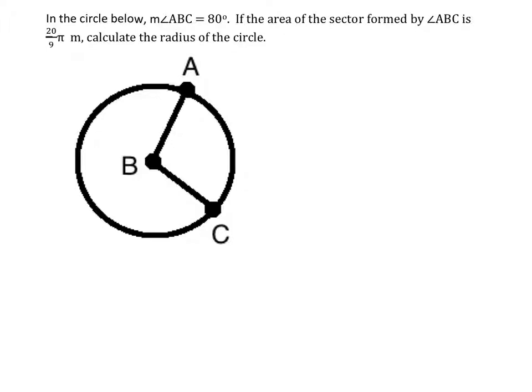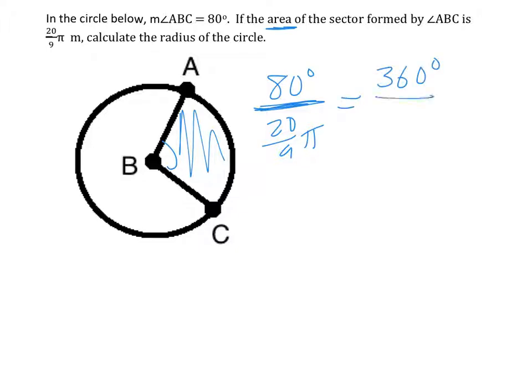So proportionally, it's very similar. We say we don't know the full area of the circle. It's not given to us. But we do know that 80 degrees, this much, represents this area, which is 20 over 9 pi. So the question is, if 80 represents 20 over 9 pi, what is the full circle area? What does 360 represent? So we're going to solve for this.